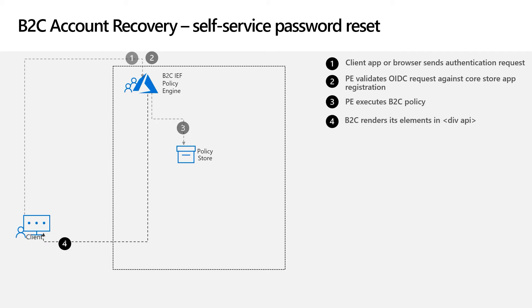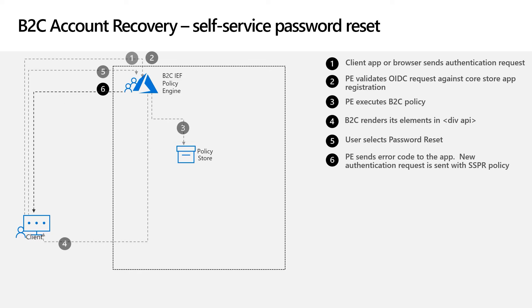B2C renders the sign-in fields into the div container with the ID API. After realizing you've forgotten your password and can't sign in, you can click the forgot password link instead. The policy engine will send an error code back to the application, and the app will respond by making a new authentication request to the password reset policy. The new authentication request contains the password reset policy ID — that's how we switch the journey.